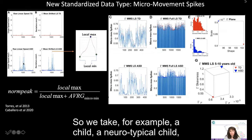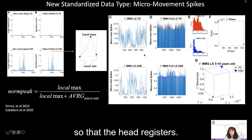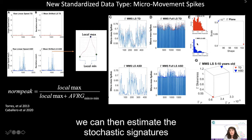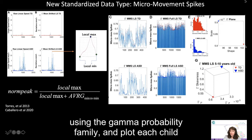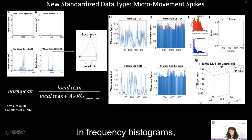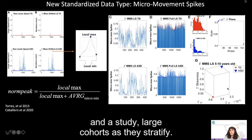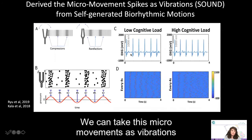Using the micro movements approach, we can estimate the stochastic signatures using the gamma probability family and plot each child in a gamma parameter space defined by the shape and scale of the distribution. This is done by gathering all peaks in frequency histograms and using maximum likelihood estimation. Using the shape and scale parameters, we can plot these points in a gamma moments parameter space and study large cohorts as they stratify. We can also take these micro movements as vibrations and convert them to sound, playing them back to the system and examining in closed loop how that self-generated music influences cognitive activities at other layers of neuromotor control, including the autonomic nervous system, instantiated by EKG signals, examining them under different levels of cognitive load.